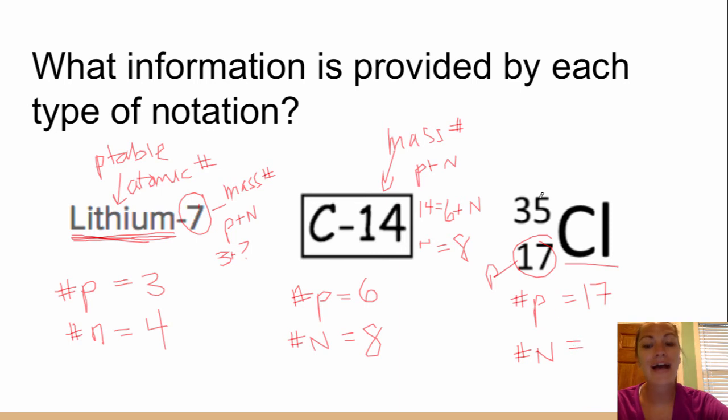The number of neutrons we have to calculate from our mass number. We're going to do the same thing. Protons plus neutrons to get our mass number. So our protons is 17, and then plus some other number is going to get up to 35 as our mass number. And that other number is going to be 18. And so we can look at the information provided and see what information we can learn from each type of notation.